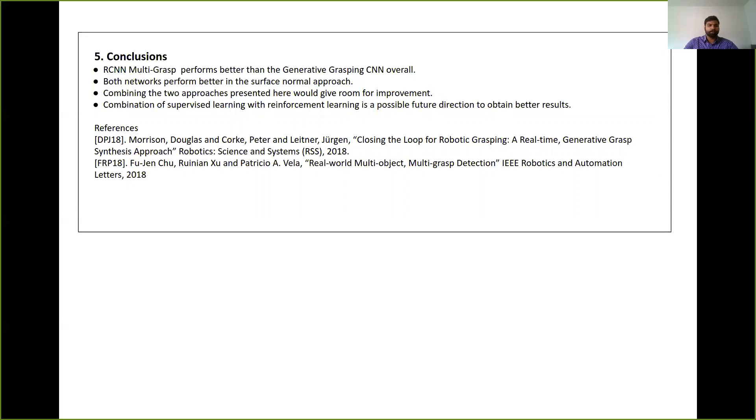And we have also concluded that combining the two approaches presented here would actually give room for improvement. This is due to the fact that the first approach would be better to grasp small and irregular objects, whereas the surface normal approach would be useful to add side grasp capabilities for regular objects. So combining these two approaches would actually improve the performance.